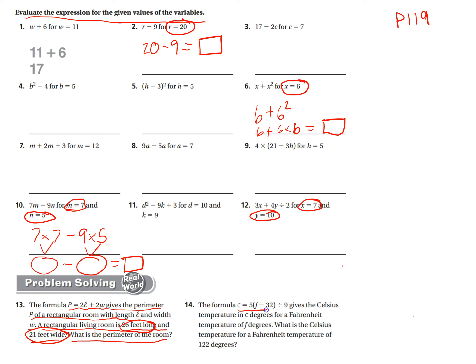Okay. The formula C equals 5 times (F minus 32) divided by 9 gives the Celsius temperature in C degrees for a Fahrenheit temperature of F degrees. What is the Celsius temperature for a Fahrenheit temperature of 122 degrees? Okay. So this is the formula for converting Fahrenheit to Celsius. And we just plug it in, though. C equals 5. And then for F, F is Fahrenheit. And it told us the Fahrenheit temperature is 122. So 122 minus 32. And then divide by 9.